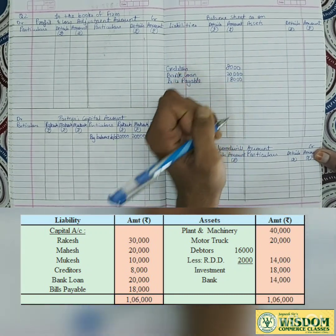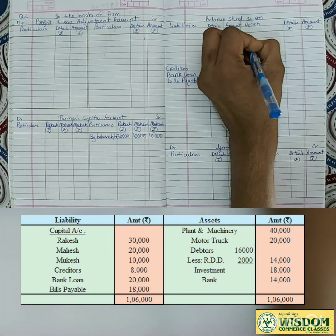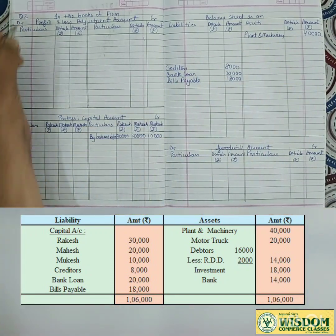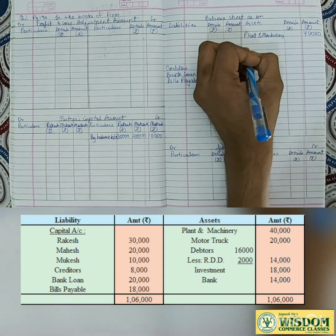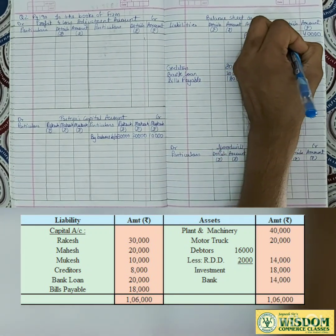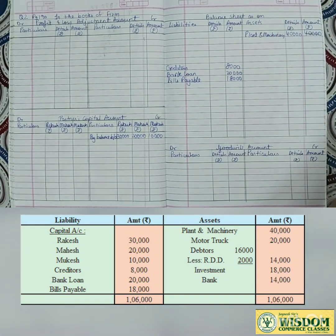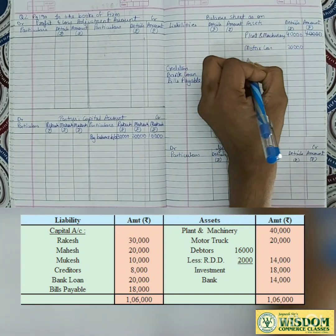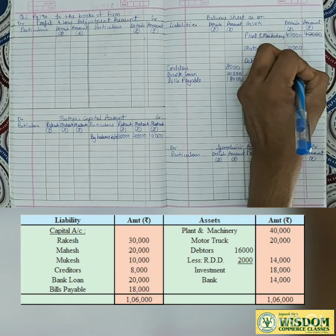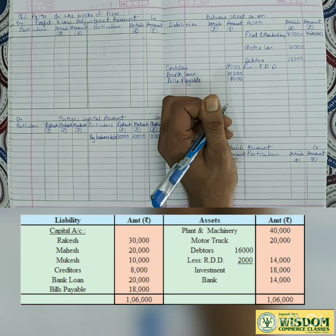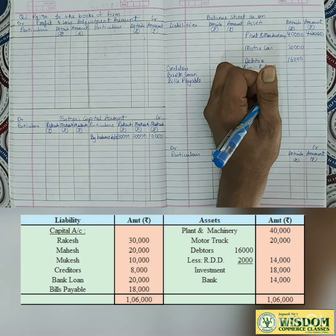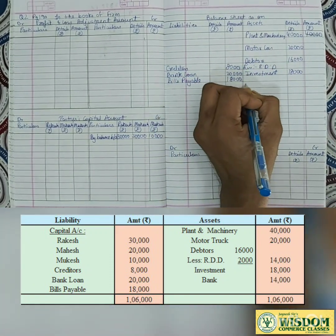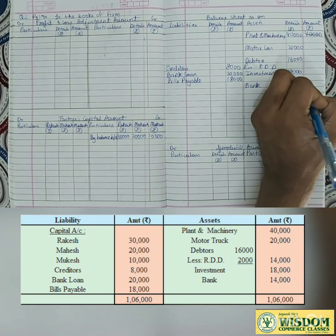On the asset side: plant and machinery 40,000 - there is an adjustment so we write 40,000 and will solve it in the revaluation. Motor truck also has an adjustment. Investment amount given is 18,000 rupees. Bank has no adjustment so we write it directly on the asset side as 14,000.